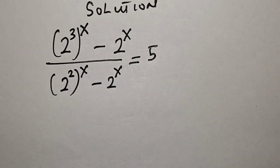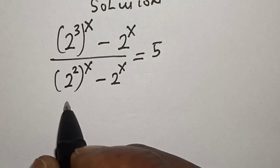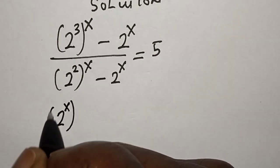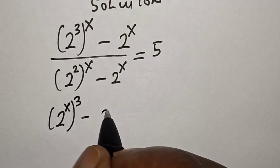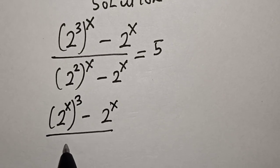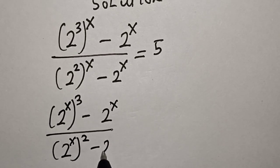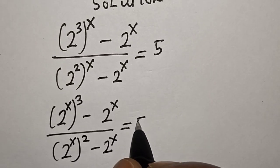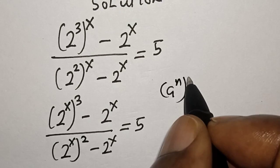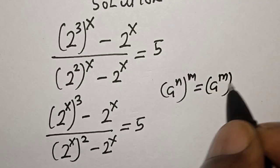From here we have 2 raised to power 3 raised to power x, which can be written as 2 raised to power x, raised to power 3, minus 2 raised to power x, divided by 2 raised to power x squared, minus 2 raised to power x, is equal to 5. This uses the rule that a raised to power n raised to power m equals a raised to power m raised to power n.